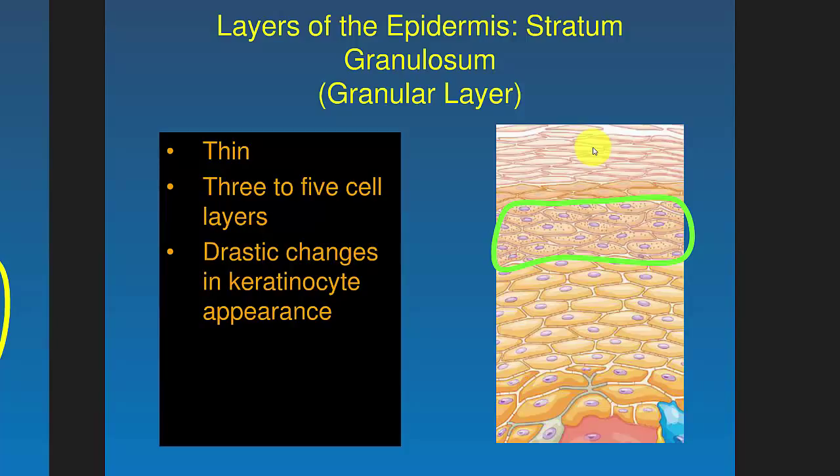The stratum granulosum, or granular layer — here the cells are starting to dry out and look punctate, with little granules in them. It's a thin layer, three to five cells thick. There's a drastic change here as the cells really start to dry out.